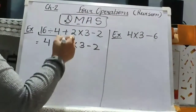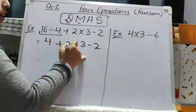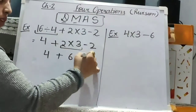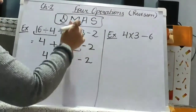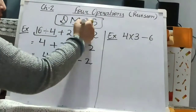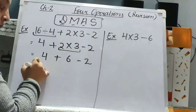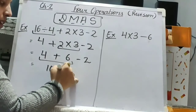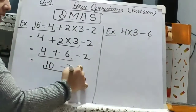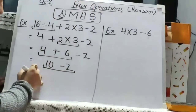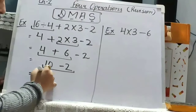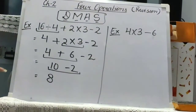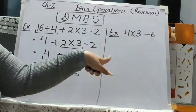Then M — multiply. So multiply 2 into 3, it will be 6, and the rest will remain the same. Then add — 6 plus 4 is 10, minus 2. And then at last we will subtract: 10 minus 2 is 8. That was the portion in which we were having all 4 operations together.